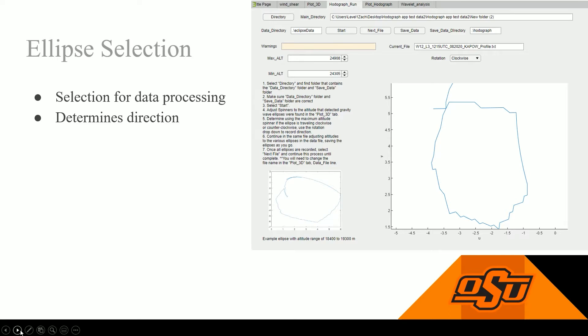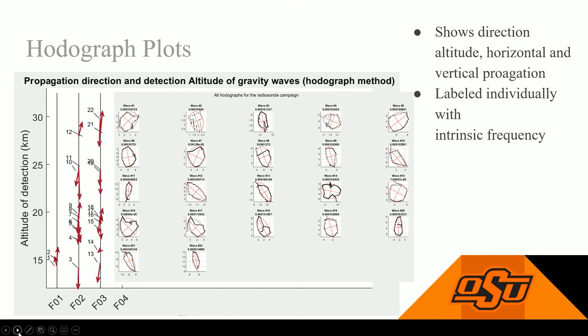Another thing we can get from these right now while we're doing this step is we can also get the vertical propagation direction, so up and down. That we can tell based on the rotation of the hodograph as we plot it. Is it clockwise or counterclockwise? Once we have all these gravity waves detected, we can plot all of the hodographs at once so we can just compare them. We can also get the detection altitudes and the propagation direction of each gravity wave. So the graph on the left will show the propagation direction. North is the upward arrow direction.